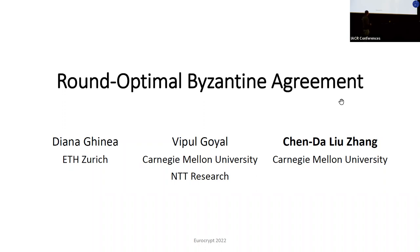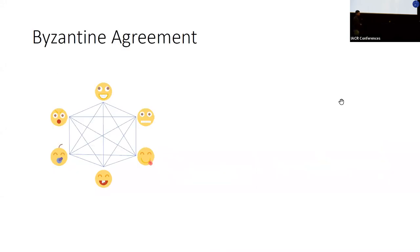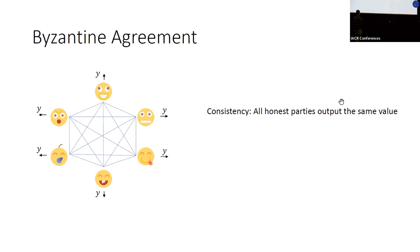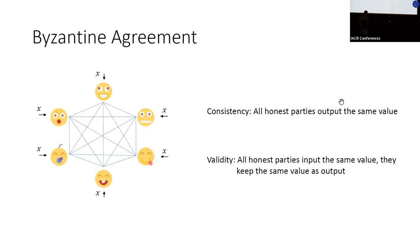Hopefully I'll convince you that one can achieve BA in a very efficient and yet conceptually simple manner. So what is Byzantine agreement? This is a distributed protocol among n parties — each party has its own input and they want to jointly compute an output with two guarantees. The first guarantee is that all honest parties have to output the same value.